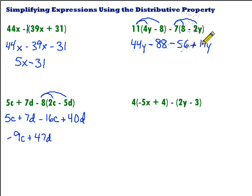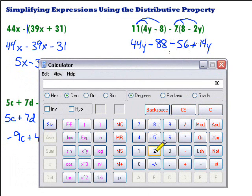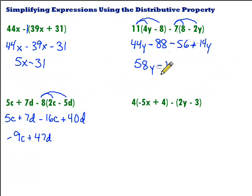Now we get to combine like terms. We have a y term, 44y, and 14y. Combining those: 44y plus 14y gives us 58y. Then we have two constant terms — terms that don't have any variables — minus 88 and minus 56. We're 88 in the negatives, then going down another 56, so negative 88 minus 56 gives us negative 144. We're done because 58y has a variable and negative 144 does not — we can't combine terms that don't have the same variables.